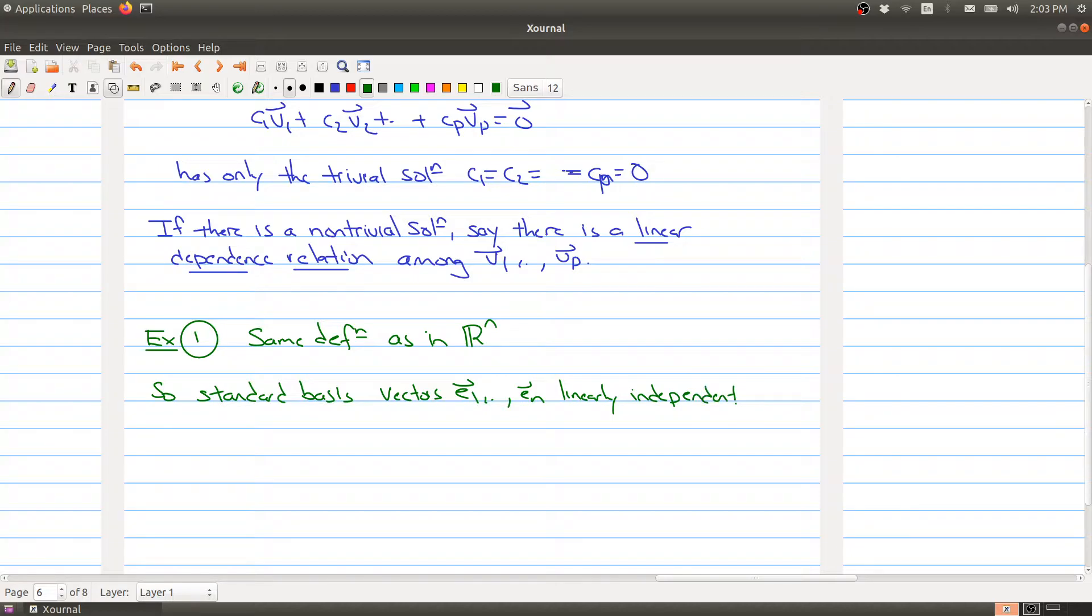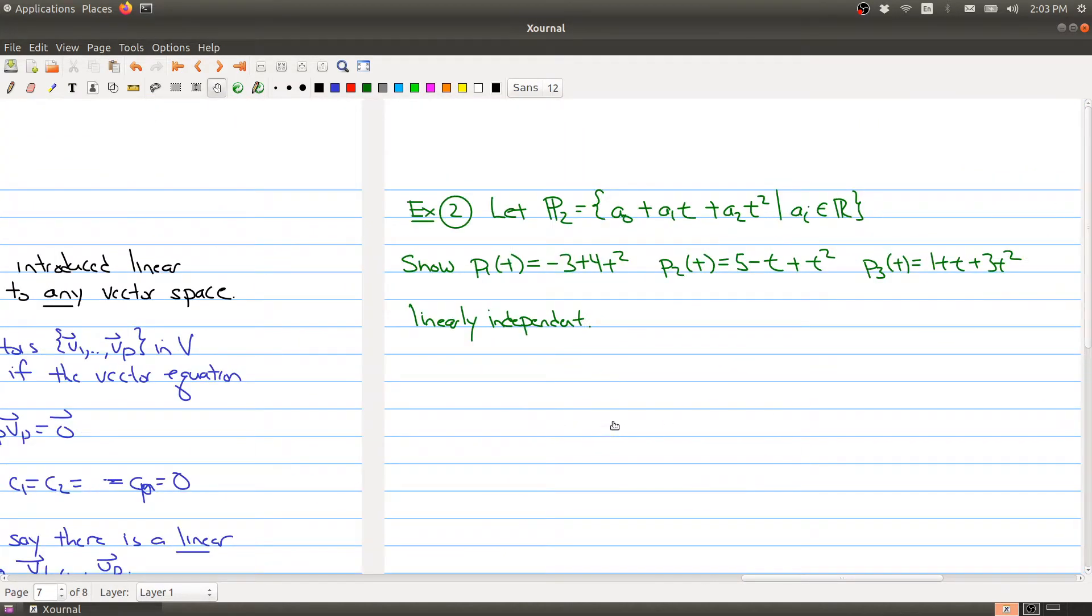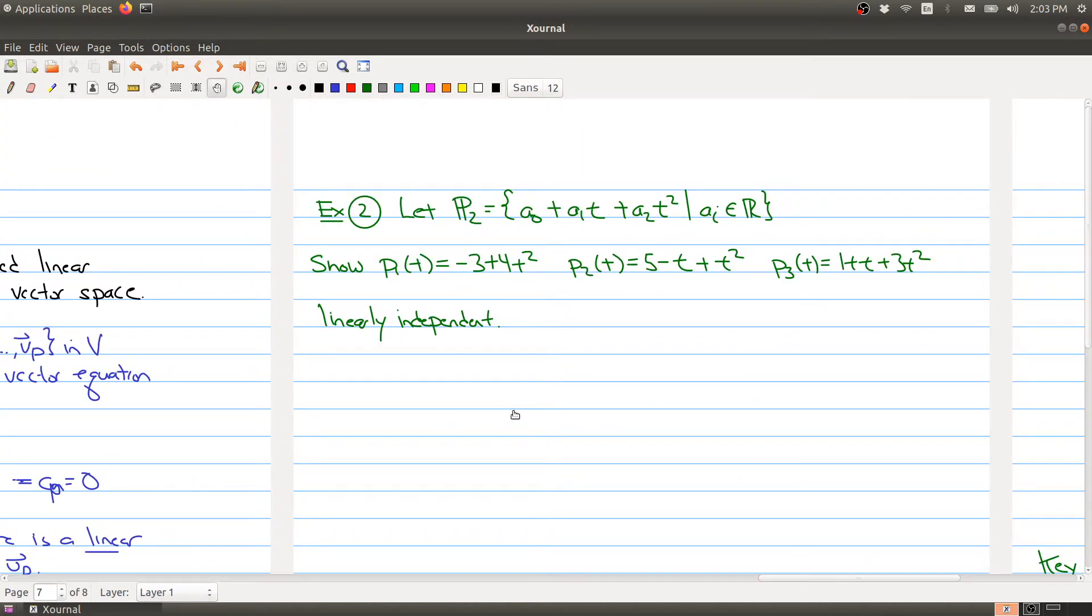So that gives us a nice example of things being linearly independent. And recall why this is true: because the only solution to this equation is when all the C_i's equals 0. So it would be more interesting to look at a little bit more complicated example. And that's actually what we're going to spend the rest of this little part of the video doing.